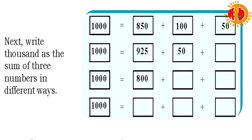Next try: 1,000 as a sum of 3 numbers in different ways. If we were doing this, then we do 3 numbers. 850 plus 100 plus 50. 850 plus 100 is 950. Plus 50 is 1,000. So, 950 plus 50 is 1,000.